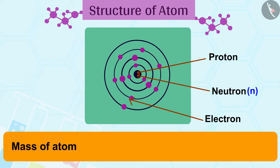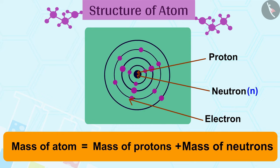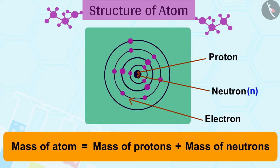The mass of an atom is therefore given by the sum of the mass of protons and the mass of neutrons present in the nucleus.